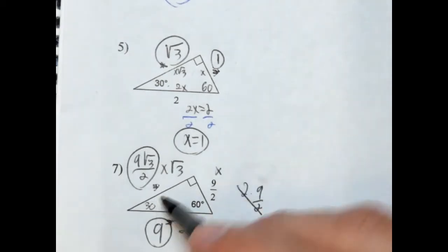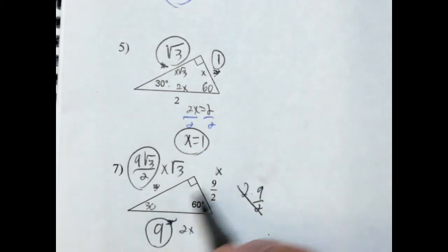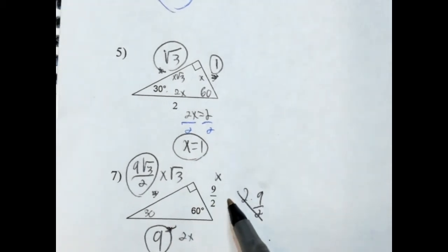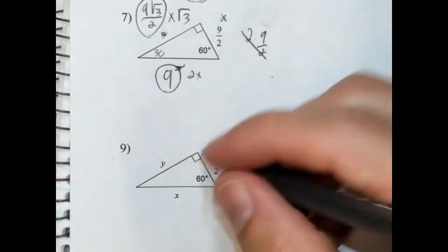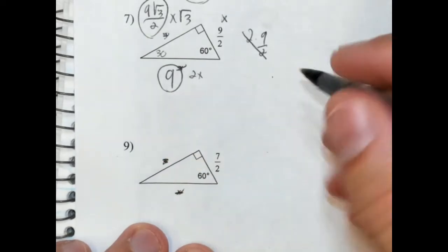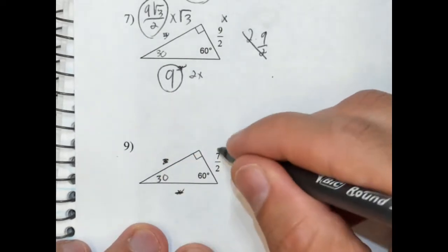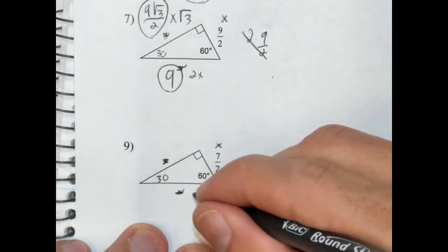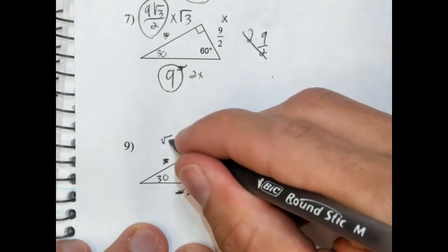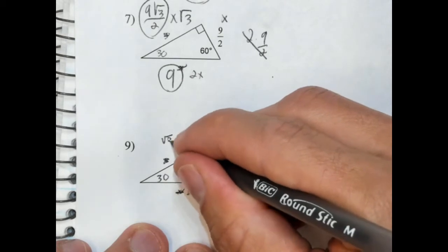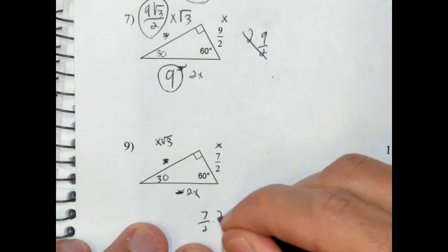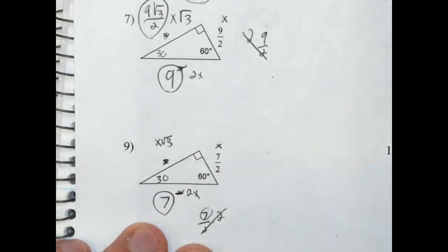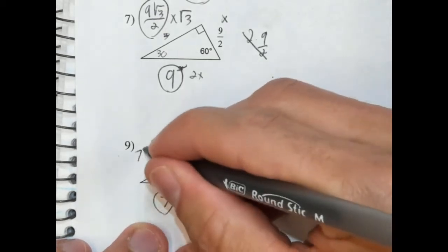So as you can see, first thing you do is identify where the angles are. Then you assign the variables. And then you simply solve — it all depends on what they give you. So 30 here. This is our short side, this is our hypotenuse, and this is our long side. So this is x. 2 times that: 7 over 2 times 2 equals 7. So this is 7. And this times radical 3 would simply be 7 radical 3 over 2.